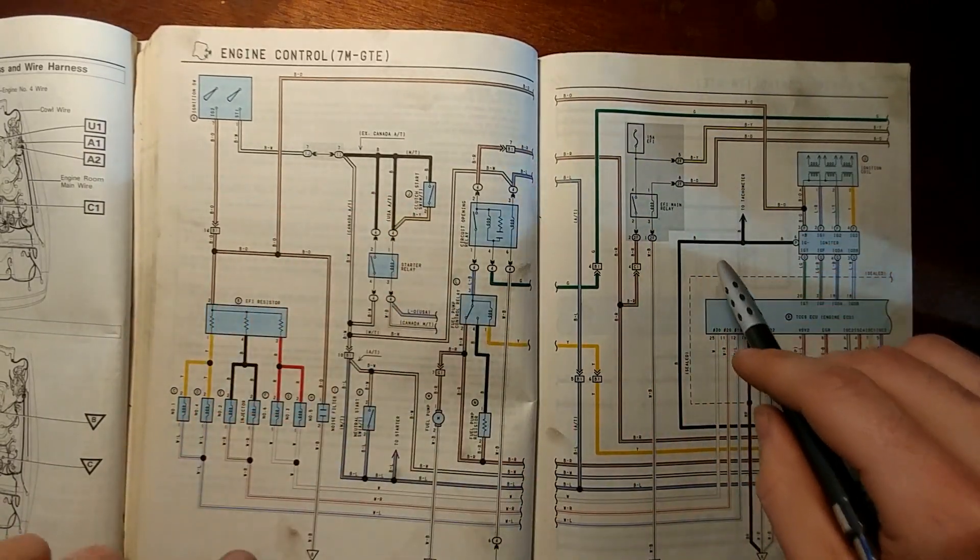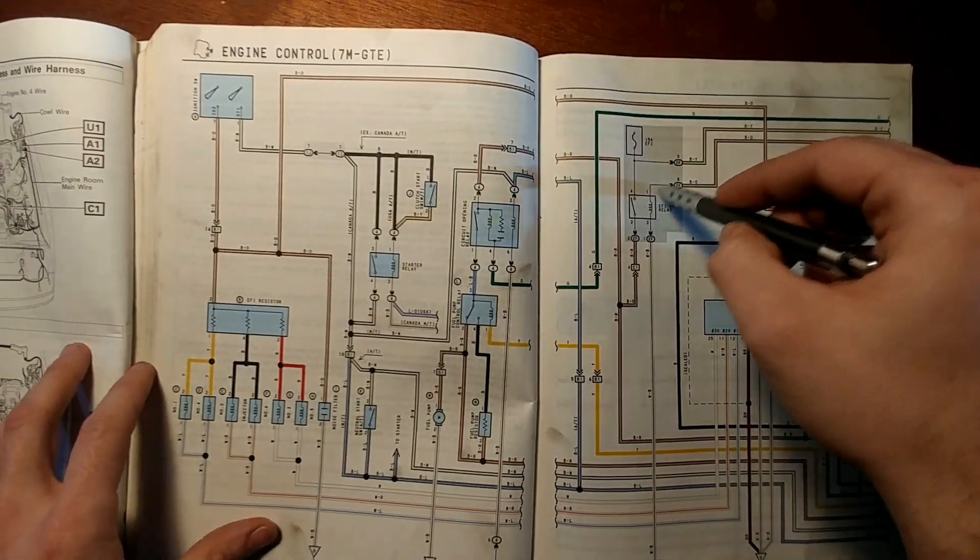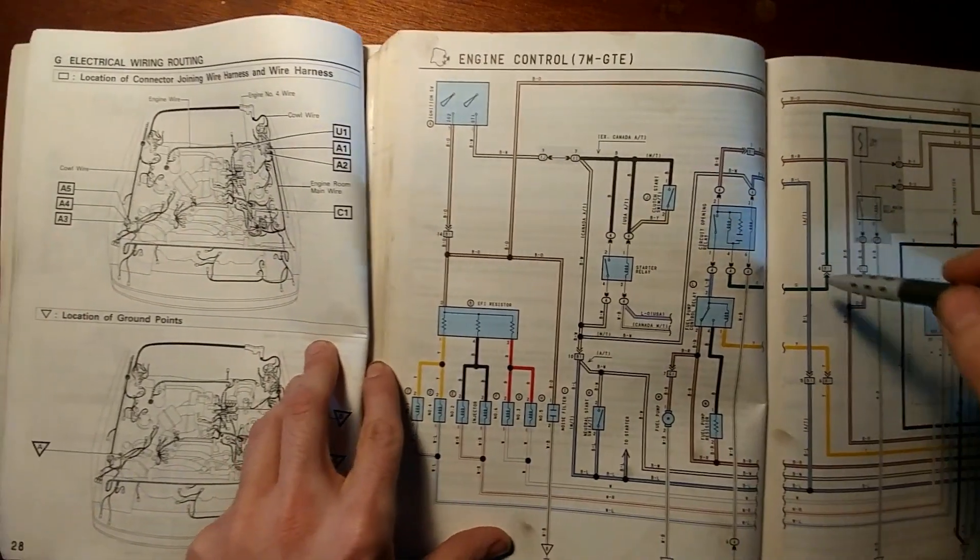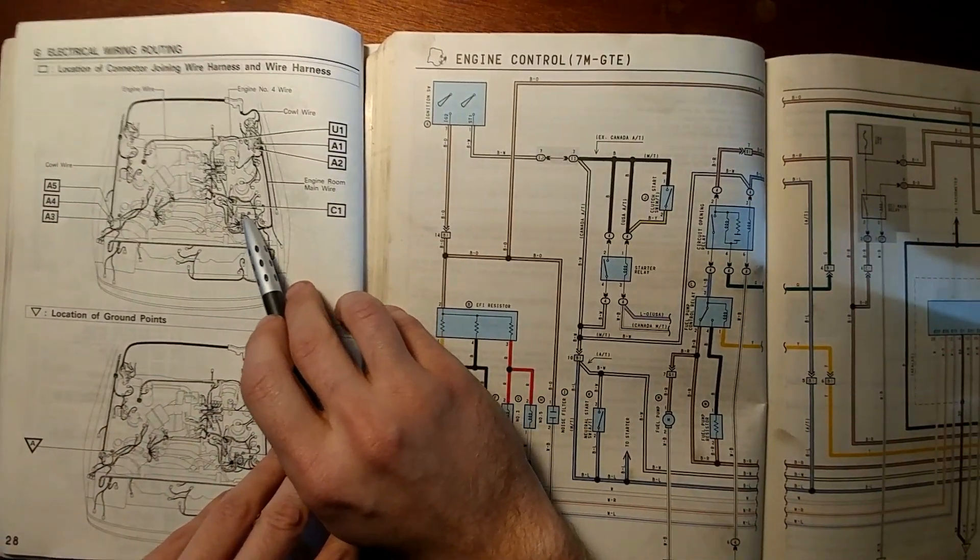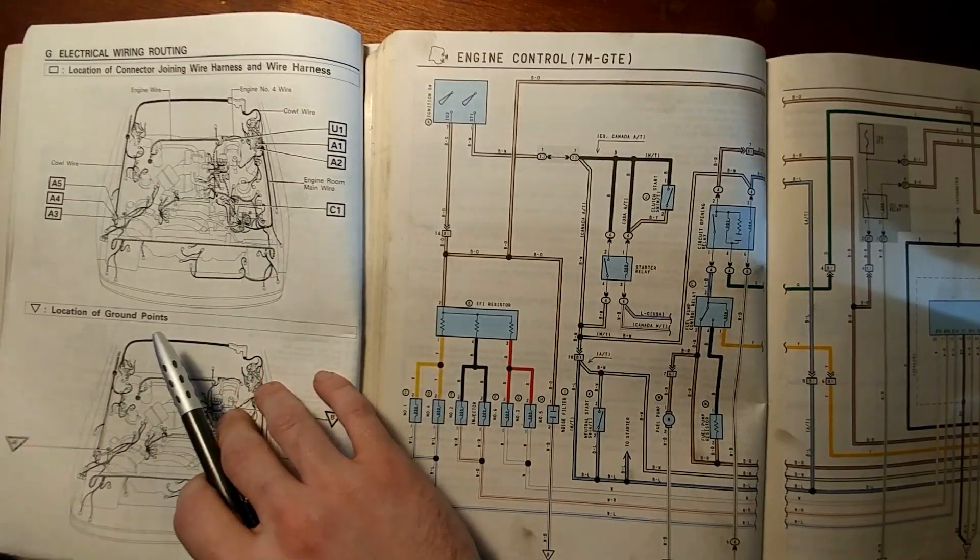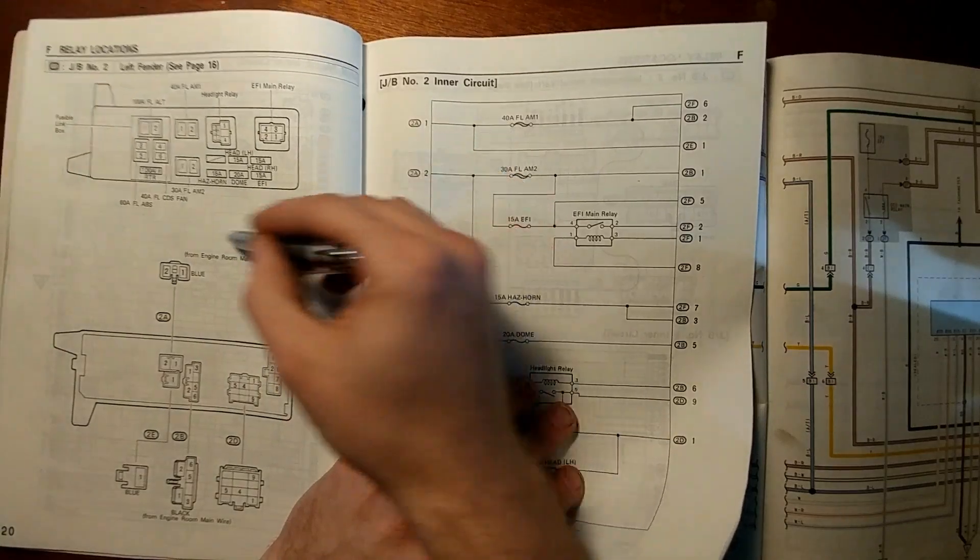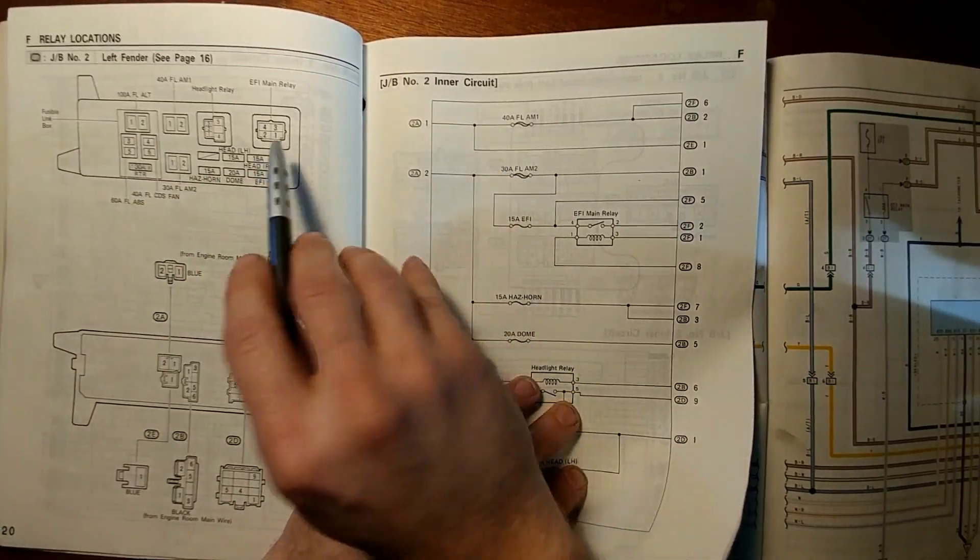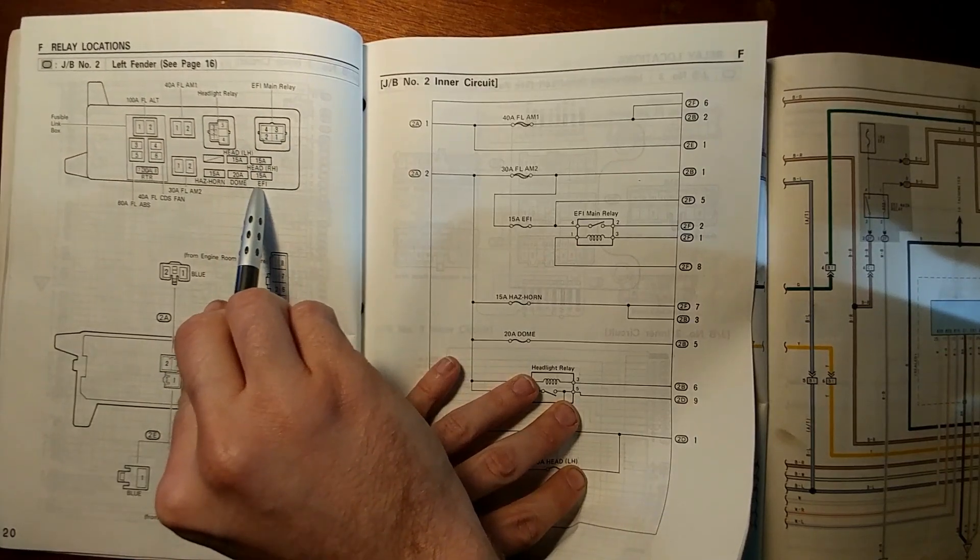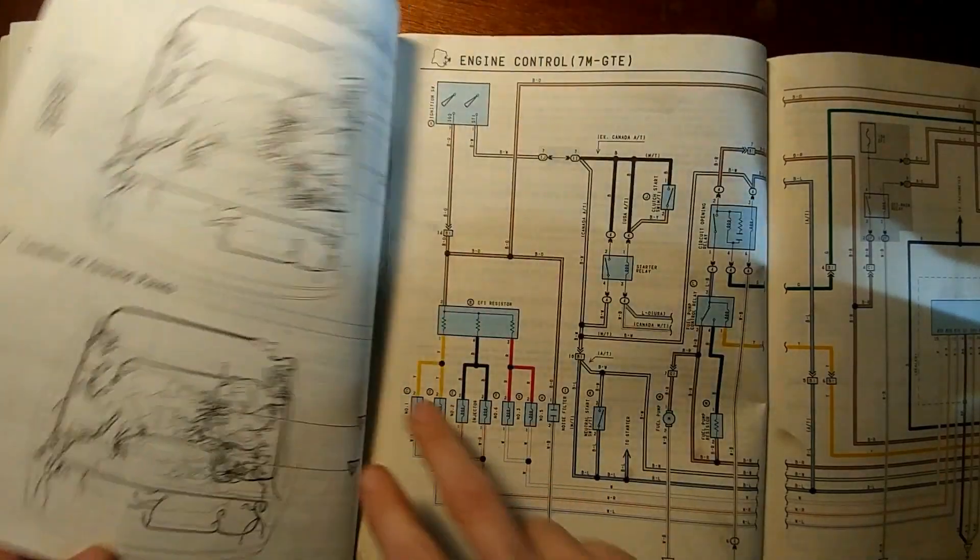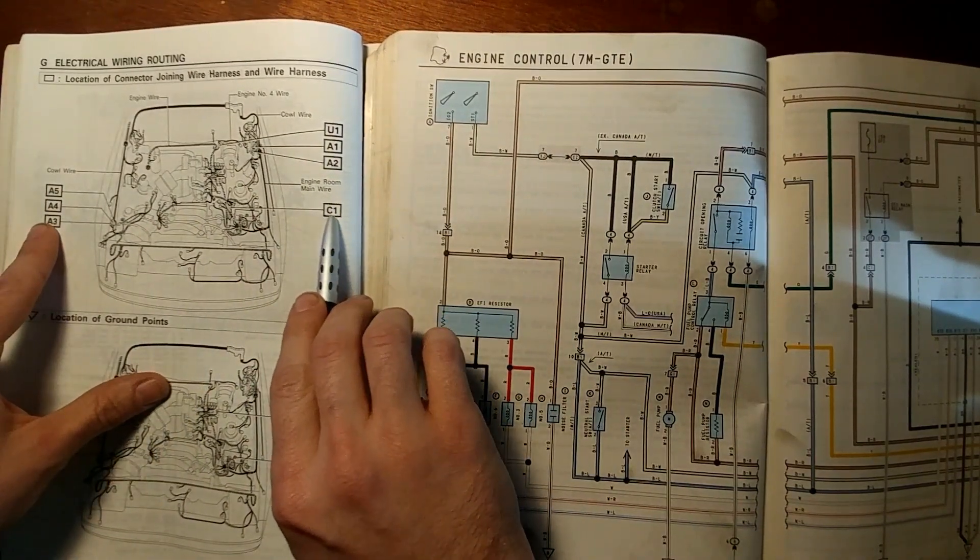So these components, this EFI main relay and EFI fuse, are located in the fuse box in the front where I think we're all familiar with. We can take a look at that right here. This is from the front of the car being here where the battery would be. You'll see the EFI main relay, it's a 4 pin, and then the EFI 15 amp fuse right there, and then the C1 connector which we talked about. That one is a 6 pin and that's located on the engine harness just adjacent to that fuse box.